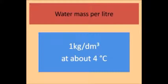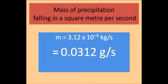A liter is a cubic decimeter. By definition, a liter of water weighs one kilogram at its maximum density. This value is accurate enough for our purposes over the temperature range on the Earth's surface. So 3.12 by 10 to the minus 5 cubic decimeters per second equates to 3.12 by 10 to the minus 5 kilograms of precipitation per second or 0.0312 grams per second.